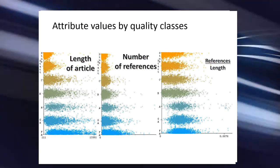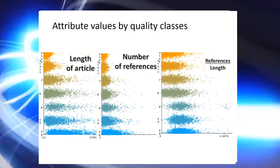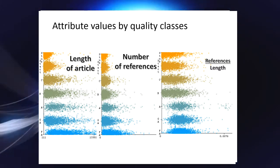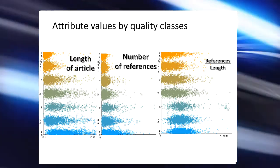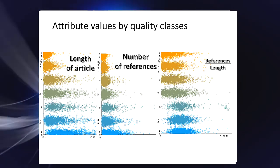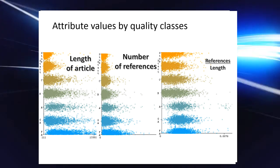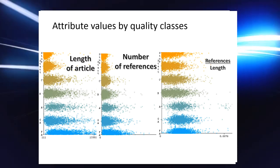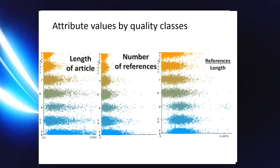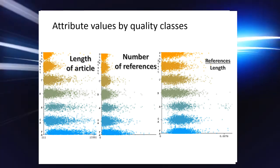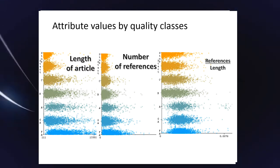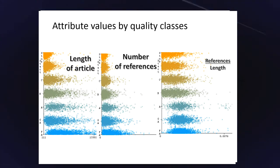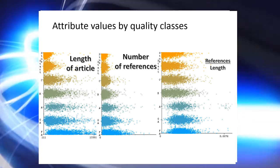We analyzed the distribution of values of various attributes in relation to quality classes. Results are presented here for English. It is basically not possible to unambiguously assign an article to a class based only on one attribute — even though the median of the analyzed attribute is increasing, the range of values is so wide that it covers several classes. Each chart presents the distribution of quality feature values in relation to seven quality classes in English, where the vertical axis shows Stub at the top as the worst class and FA at the bottom as the best class.